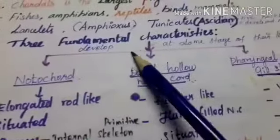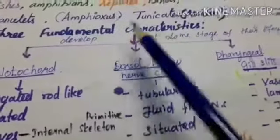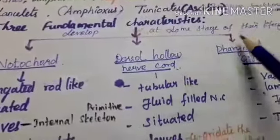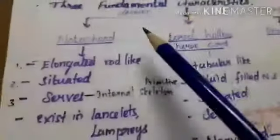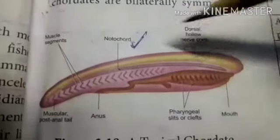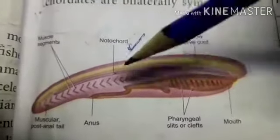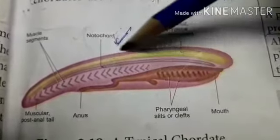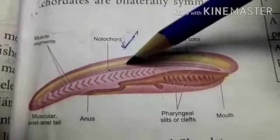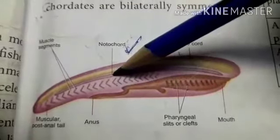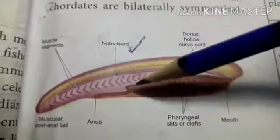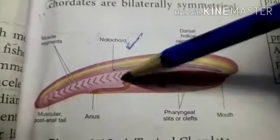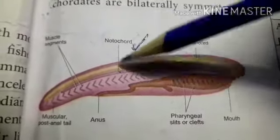These two groups of organisms are invertebrates, but some of their common fundamental characteristics resemble those of the chordates. What are the three fundamental characteristics? These characteristics develop at some stage of their life cycle. First: notochord. Second: dorsal hollow nerve cord. Third: pharyngeal gill slits or clefts. The notochord is located above the alimentary canal and below the dorsal hollow nerve cord — a long elongated tubular structure.